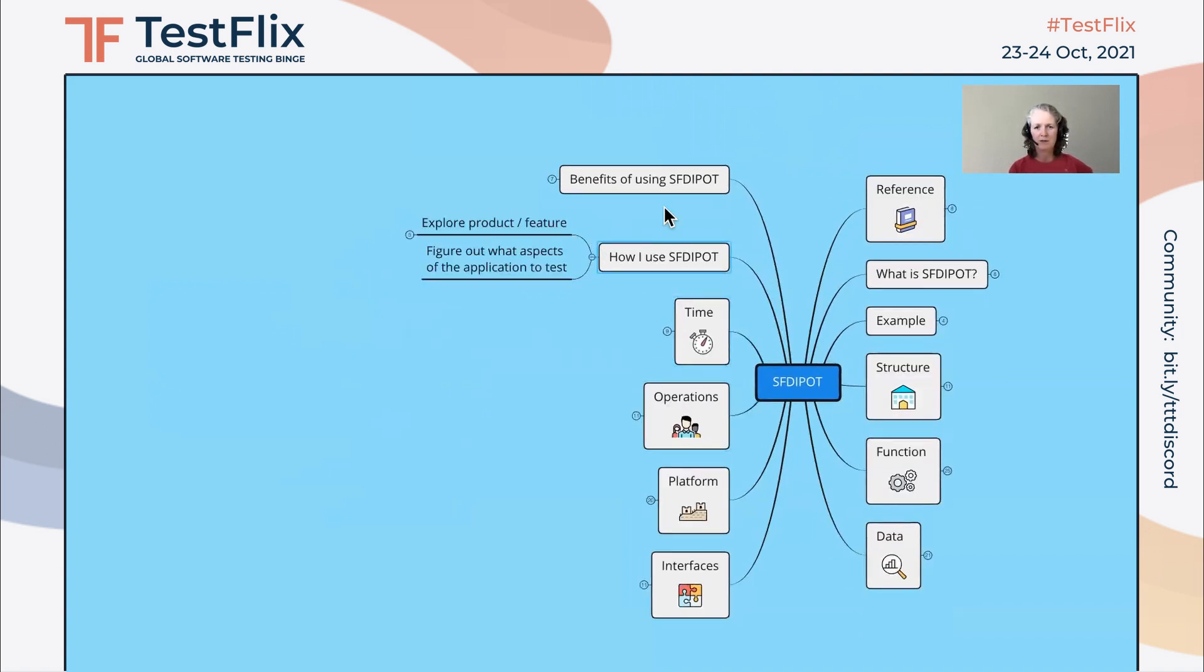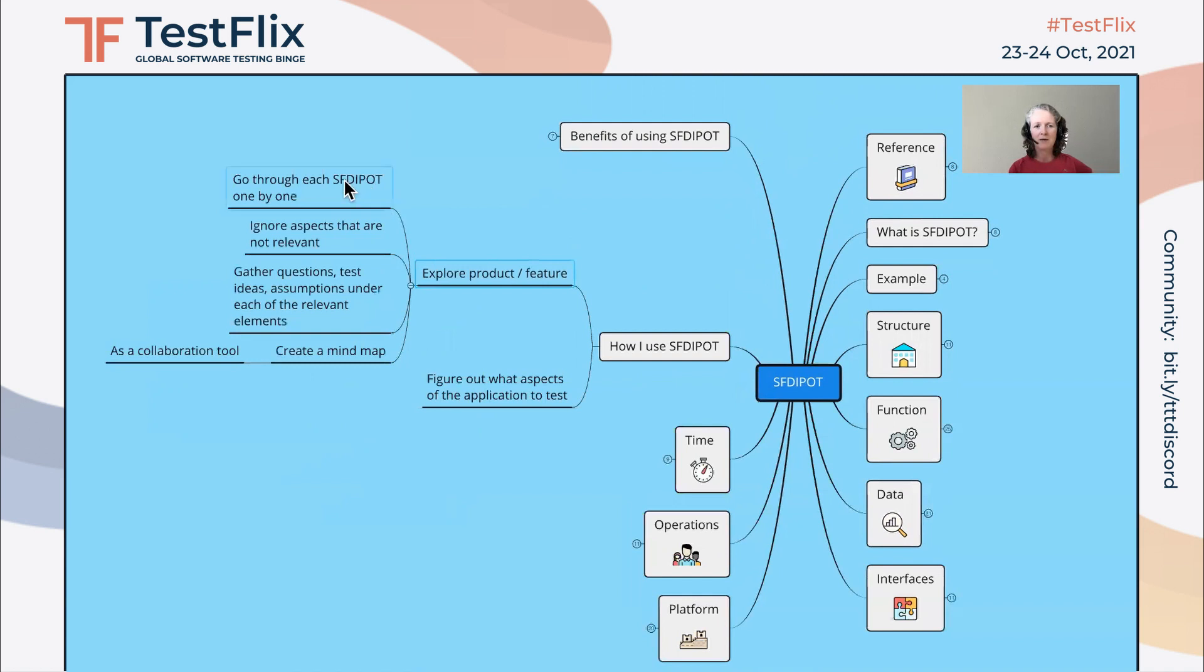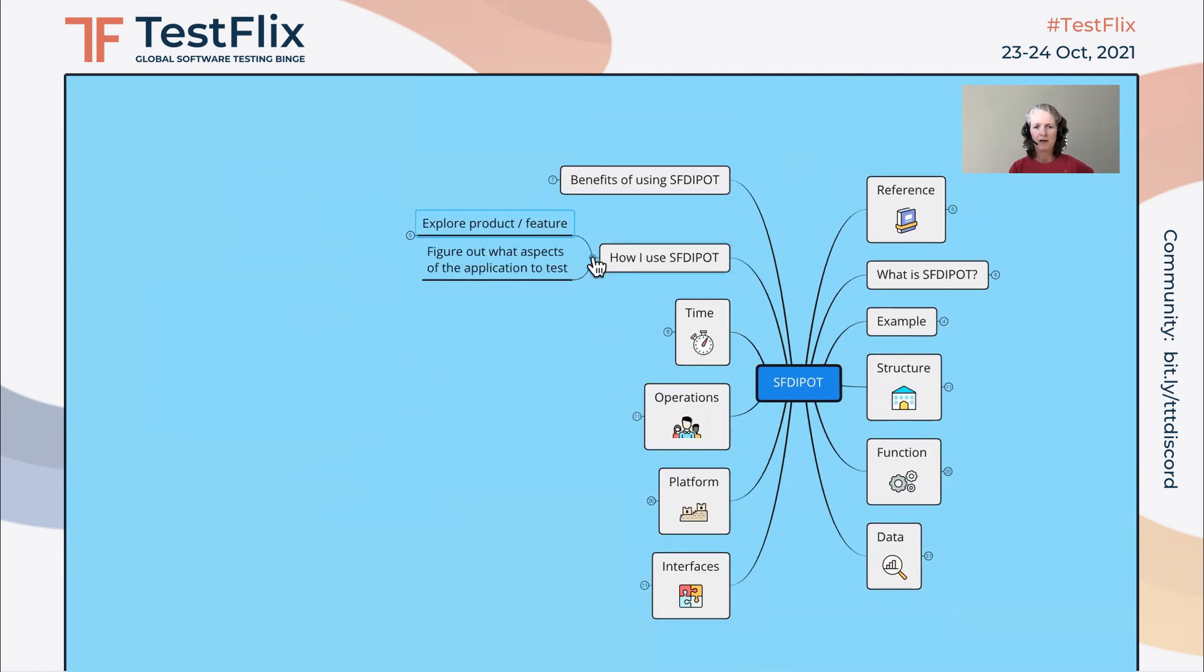So in summary, how do I use San Francisco Depot? I use it to explore the product and feature, and that helps me to figure out what aspects of the application to test. We go through each of the elements individually, ignore what's not relevant, and then we gather all the information that we have so far, and we create a mind map from that and use it as a collaboration tool later with the team and other stakeholders.